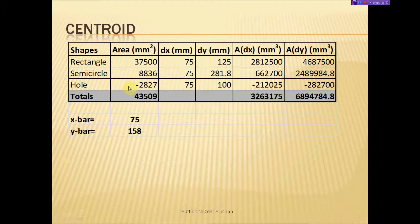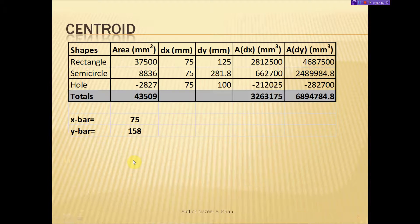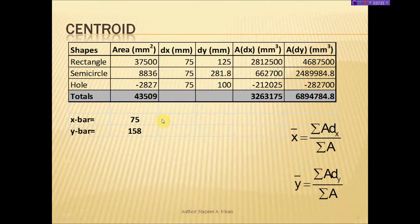When we put the circle in our table, we must place a minus sign in front of that area — the minus is very important. The reason is that when we calculated the area of the rectangle, we did not subtract the area of the hole, so now in the table we are subtracting it. The summation of this area column is the denominator for both equations: the summation of areas.